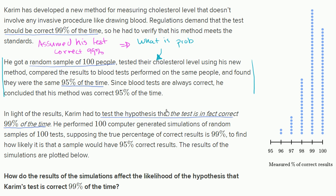So let's interpret what's happening in this chart. The computer is running 100 simulations — simulating 100 samples, each of those samples having 100 people. So for each sample — say sample number one — there are going to be 100 of these samples total.